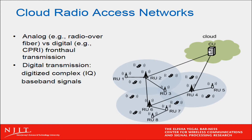The radio signals that go from the cloud to the radio units travel through links known as fronthaul links, in contrast to backhaul links which connect the cloud to the core network. This can happen in two ways: either the radio signals are sent in analog format over these links — so-called radio over fiber — or they can be digitized at the baseband level and sent in digital format using a standard currently known as CPRI. Here I'll focus on the more common second case of digital transmission.